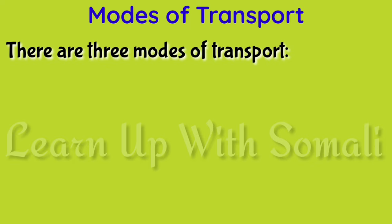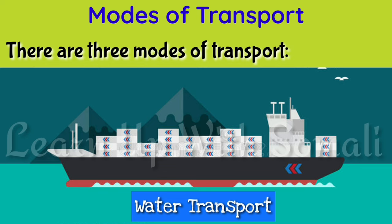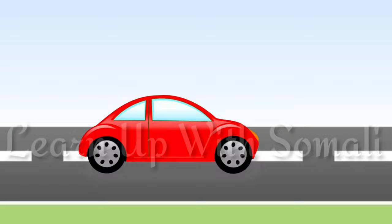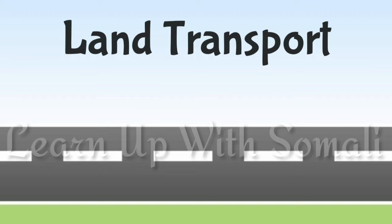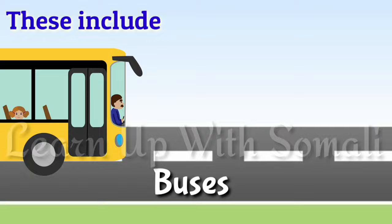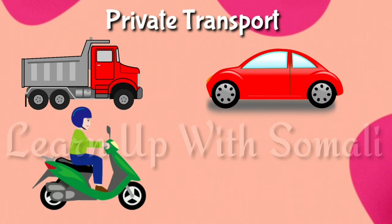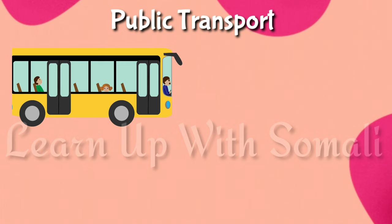The three modes of transport are: number one, land transport; number two, water transport; number three, air transport. Traveling by the means of land is called land transport. Nowadays, faster means of land transport are being used — these include cars, buses, scooters, motorcycles, and trains. Cars, scooters, and bikes are included in private transport, while buses and trains are called public transport.